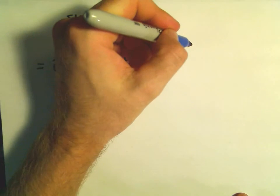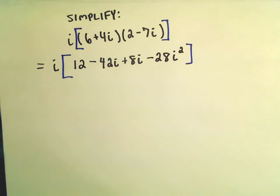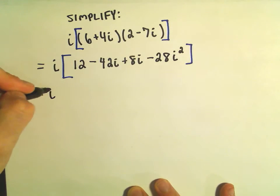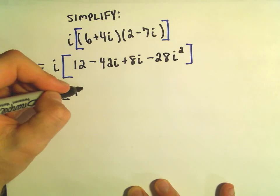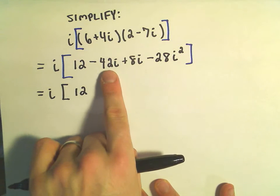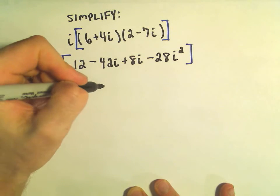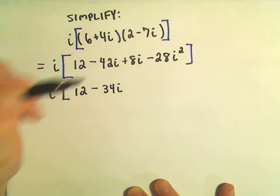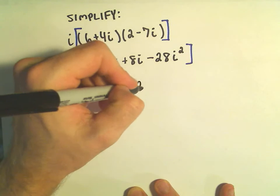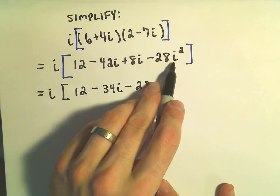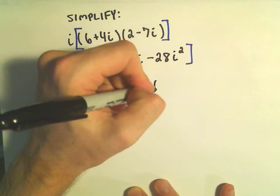Okay, so I'm going to continue simplifying inside the brackets. So the i is just hanging out front. We have 12, let's see. We've got negative 42i plus 8i. I believe that's going to give us a negative 34i. We still have our minus 28 but we can replace our i squared again with negative 1.